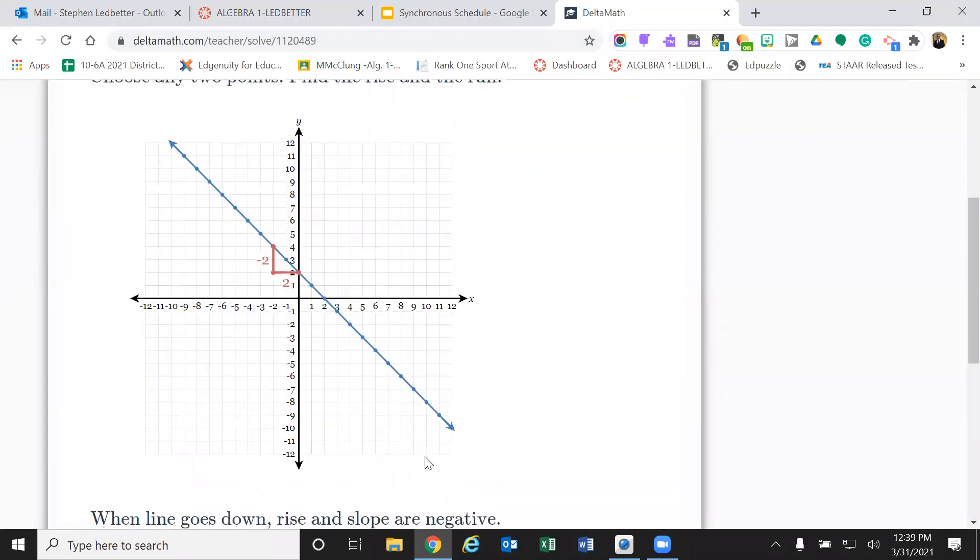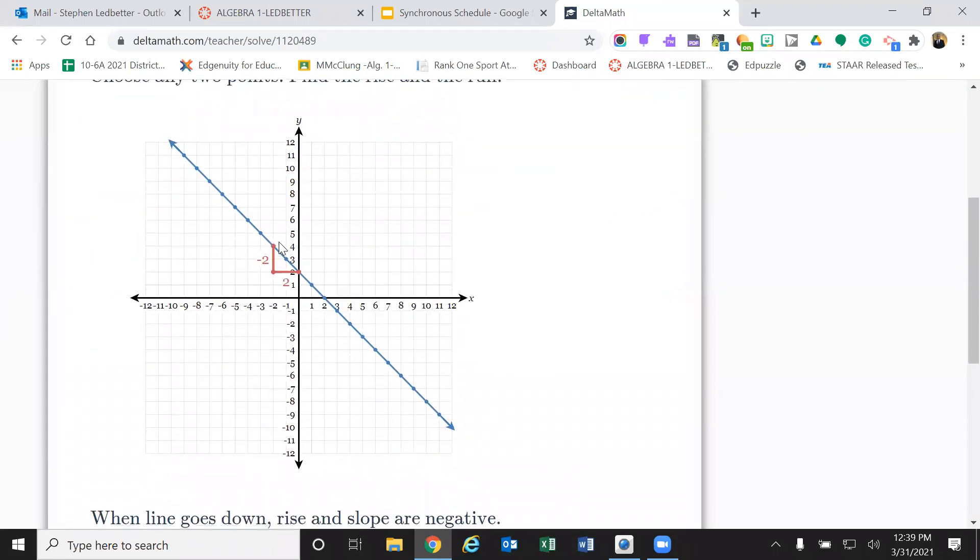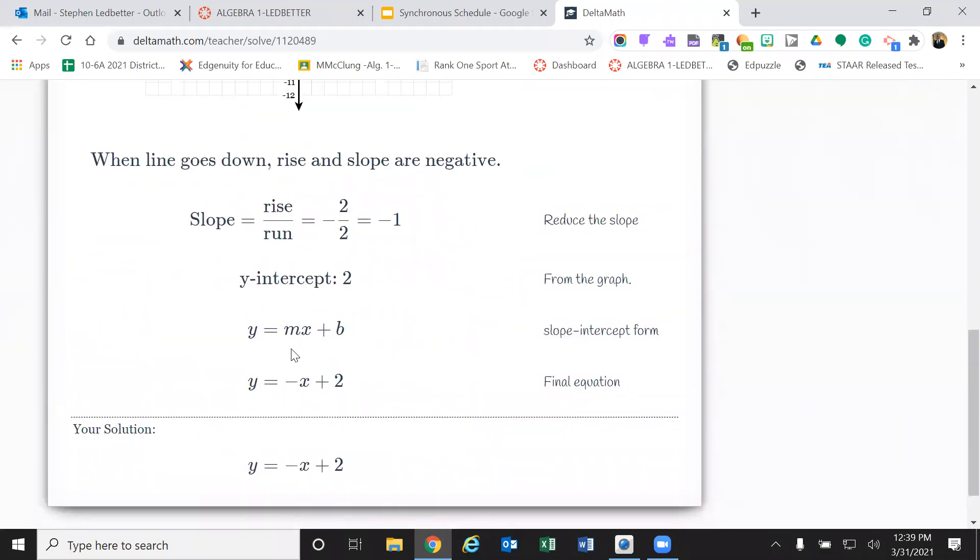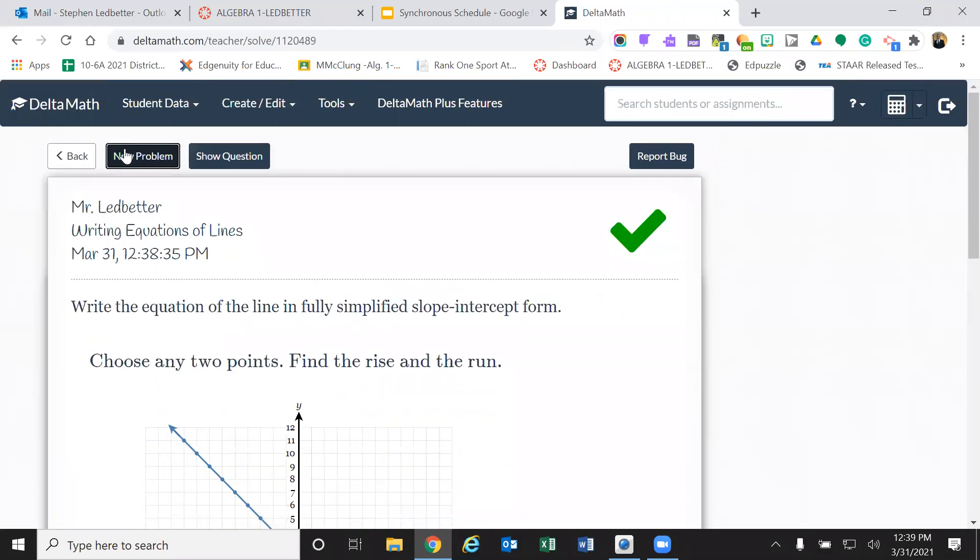And you can see I got it right. Now they use two or two, but you can use one over one, three or three or whatever. All right. And then you just plug it in. So we're just finding the slope and the y-intercept and we're just plugging them in. Let's do another one.